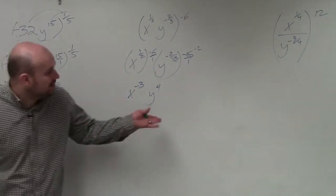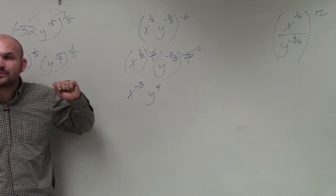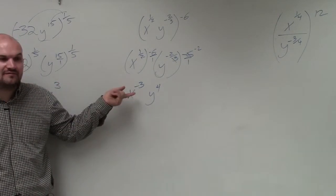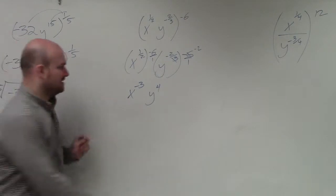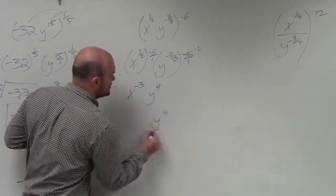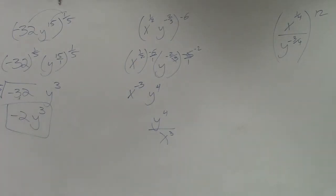OK, now the last step would be, let's rewrite this without any negative exponents. So if this is negative in the numerator, to make this positive, I have to write it in the denominator. So my final answer is y to the fourth over x cubed. Got that, Jack?